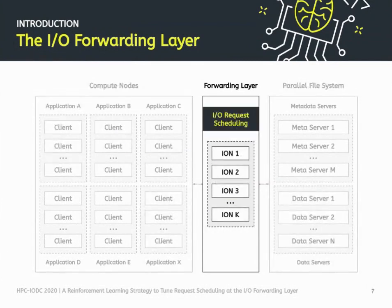Since this layer is transparent to applications — they don't need to know it's there — and also file system agnostic, it's a great place to apply IO optimization techniques such as request reordering, aggregation, or compression. One of these techniques is IO request scheduling, which is the focus of this work.